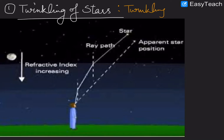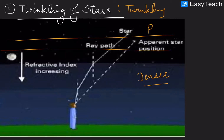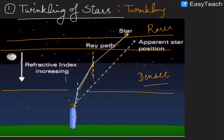The surface layer is a denser medium, and as you move above the layers are rarer. When light from a star moves from a rarer to a denser medium, it bends towards the normal. At each successive layer — as the medium alternates between rarer and denser — the ray keeps bending towards the normal. If we extend the final ray backwards, we can see a dotted line showing the apparent position of the star.